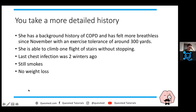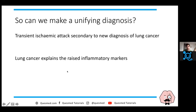Looking at the more detailed history: she has COPD, she's felt more breathless, has an exercise tolerance of 300 yards, and can't climb steps without stopping. Her COPD seems well controlled with no significant chest infections, but she does smoke and has had no weight loss. Can we make a unifying diagnosis? Probably yes.